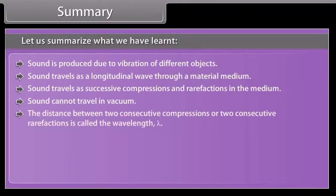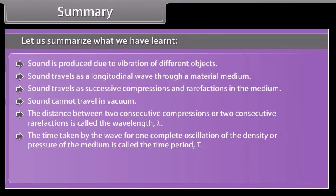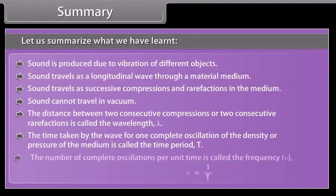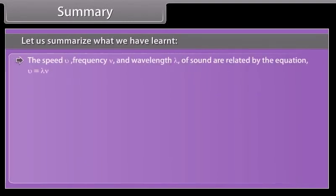Let us summarize. The distance between two consecutive compressions or two consecutive rarefactions is called wavelength lambda. The time taken by the wave for one complete oscillation of the density or pressure of the medium is called the time period T. The number of complete oscillations per unit time is called the frequency nu is equal to 1 upon T. The speed v, frequency nu, and wavelength lambda of sound are related by the equation v is equal to lambda into nu.